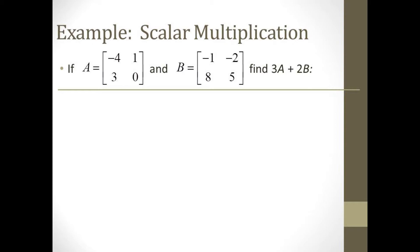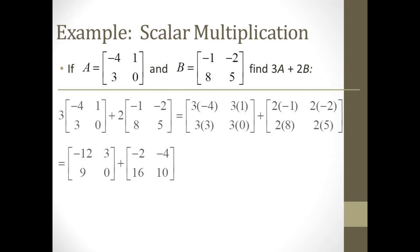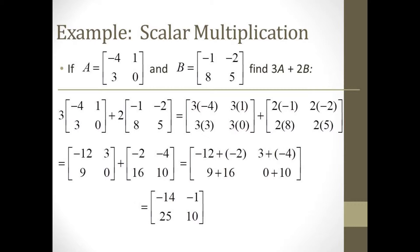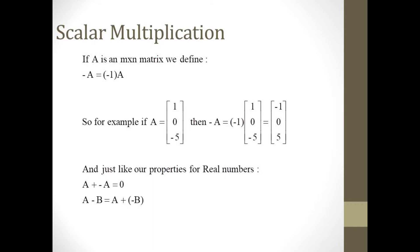For this next example, we are given two 2 by 2 matrices A and B and asked to calculate 3A plus 2B. We start by performing the scalar multiplication on each matrix — multiply each element of A by 3 and each element of B by 2. Thus, 3A is negative 12, 3, 9, 0 and 2B is negative 2, negative 4, 16, 10. Now we add the two 2 by 2 matrices by adding corresponding elements. Our result is the 2 by 2 matrix negative 14, negative 1, 25, 10.